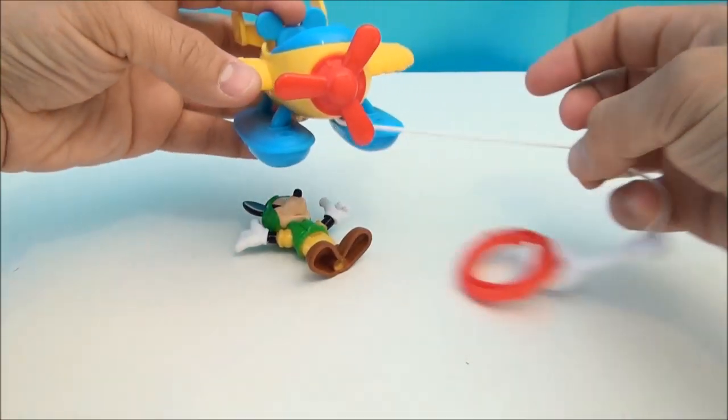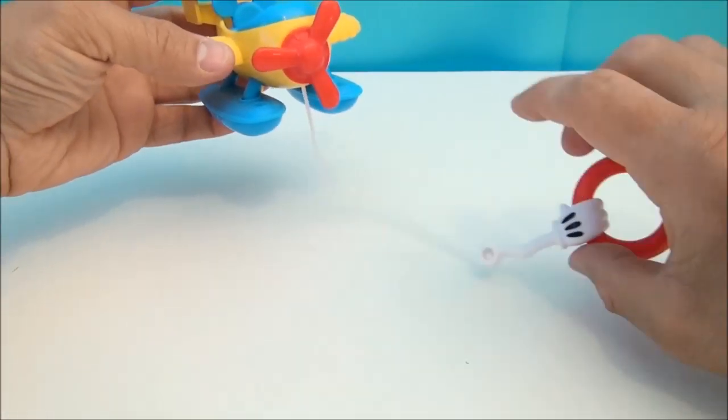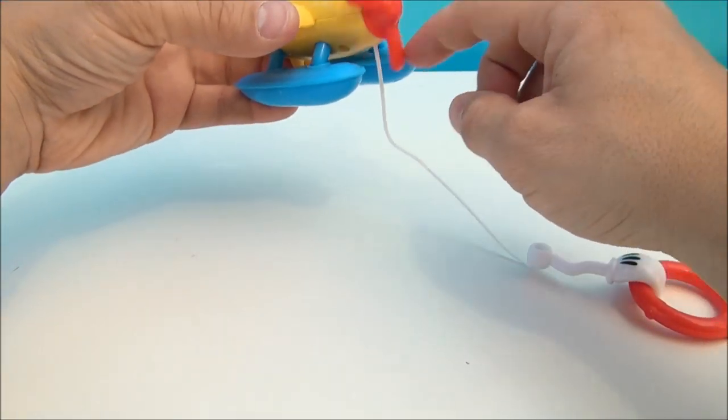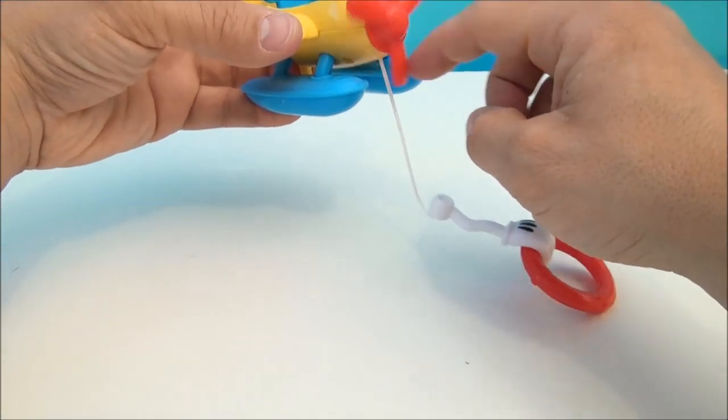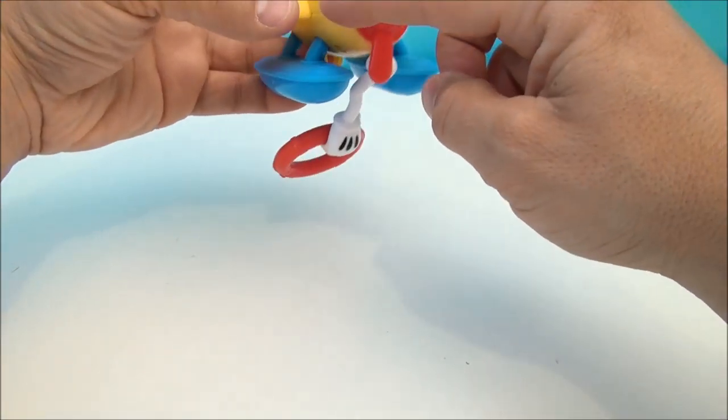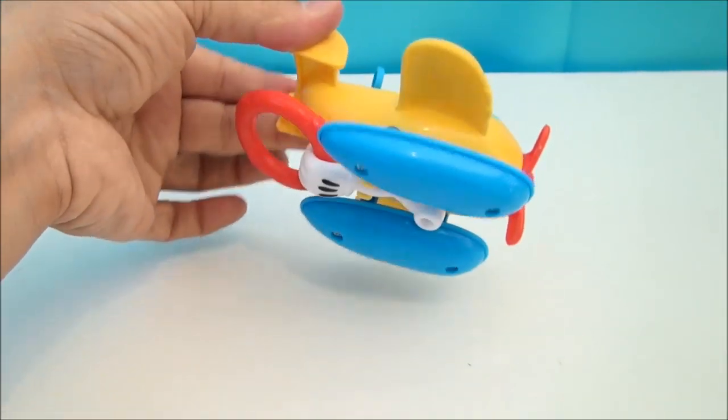But the way this thing does work, if you can actually snag one of your other figures, is you simply spin the propeller and it winds them up for the rescue. So we'll clip that back in place.